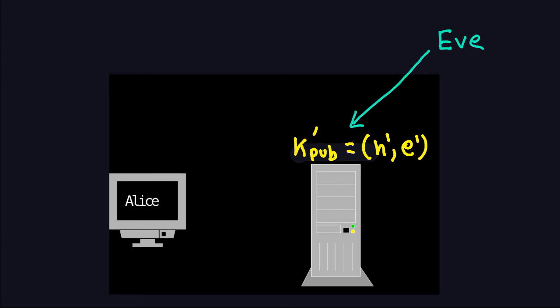This impersonation problem is one reason not to use schoolbook RSA in real implementations. Similar weaknesses exist in schoolbook RSA encryption/decryption. These weaknesses can be managed with padding. In the next video, we'll discuss further security aspects of the RSA signature in more detail.